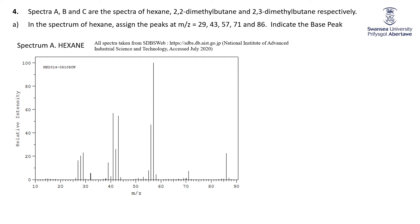So now we move to, I think, the more interesting application of a mass spec, and that is applied to molecules where we're looking at the fragmentation patterns. So three spectra in question four, A, B, C, which are three isomers of hexane — C6H14 in all the cases: hexane, 2,2-dimethylbutane, 2,3-dimethylbutane.